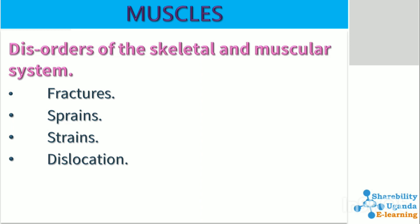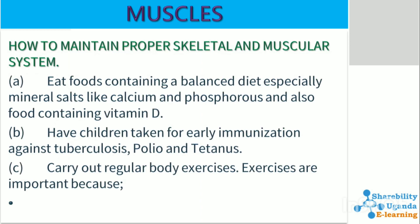Disorders of the skeletal and muscular system include fractures, sprains, strains, and dislocations, among others. To maintain a proper skeletal and muscular system, eat a balanced diet especially mineral salts like calcium and phosphorus, and foods containing vitamins especially vitamin D. Have children taken for all immunizations against tuberculosis, polio, and tetanus.